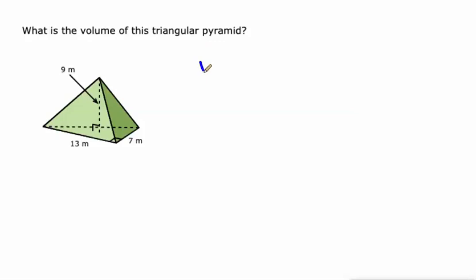Now we have a pyramid. So we're gonna use a slightly different formula. It's one third the area of the base times the height of the pyramid. So what's our base this time? It's a triangle. Could be different shapes. It could be a square down there. It could be a rectangle down there.